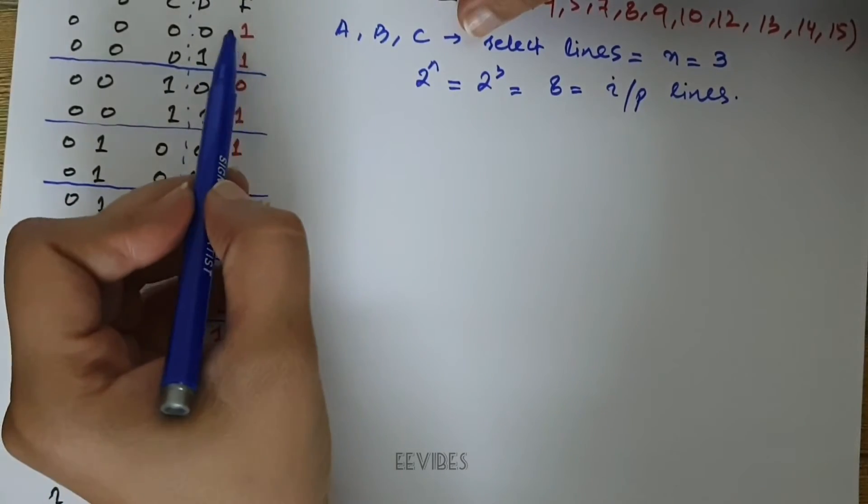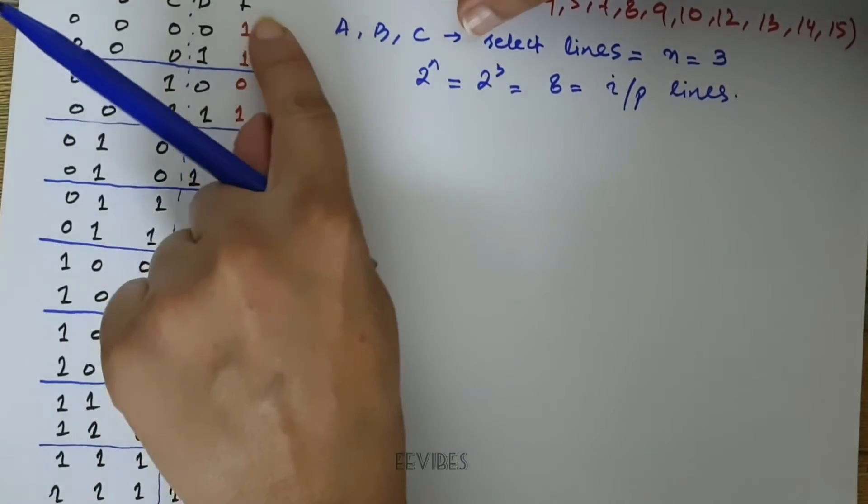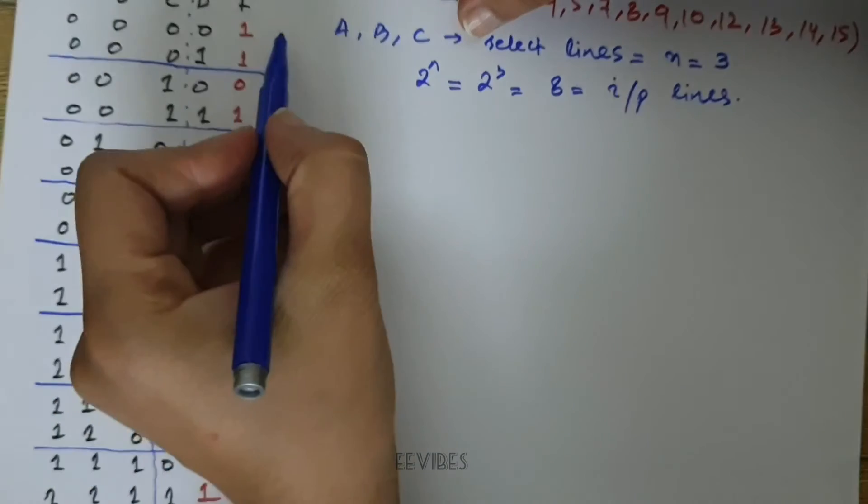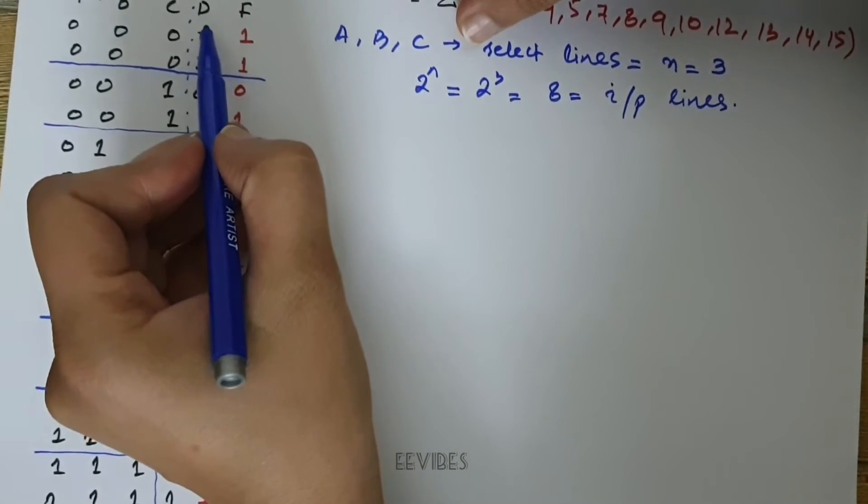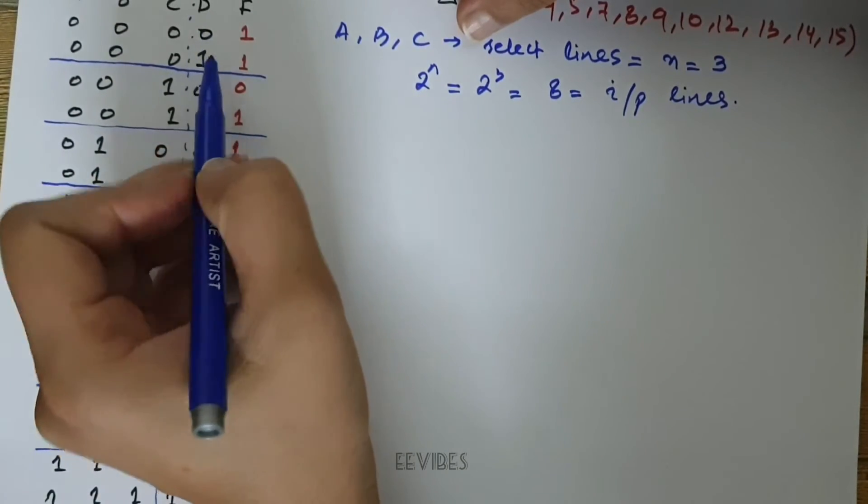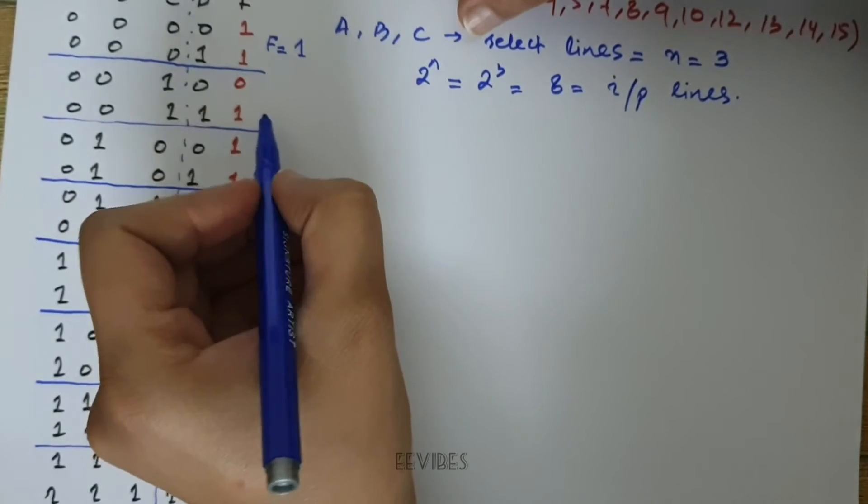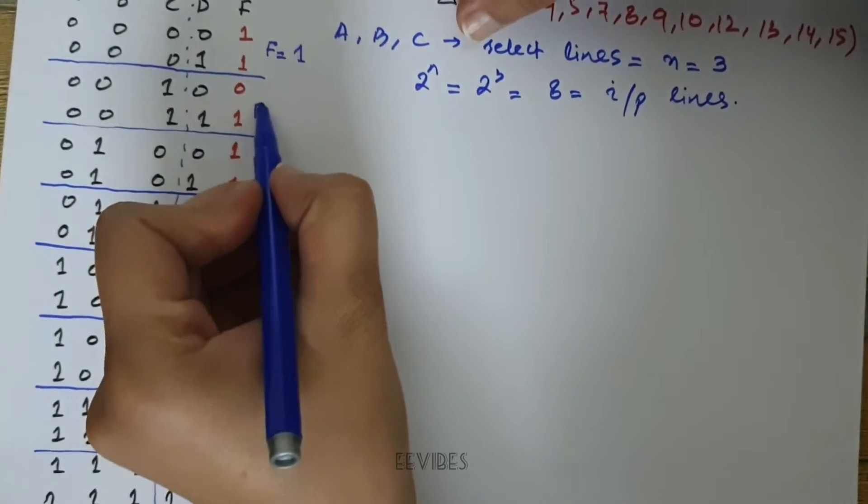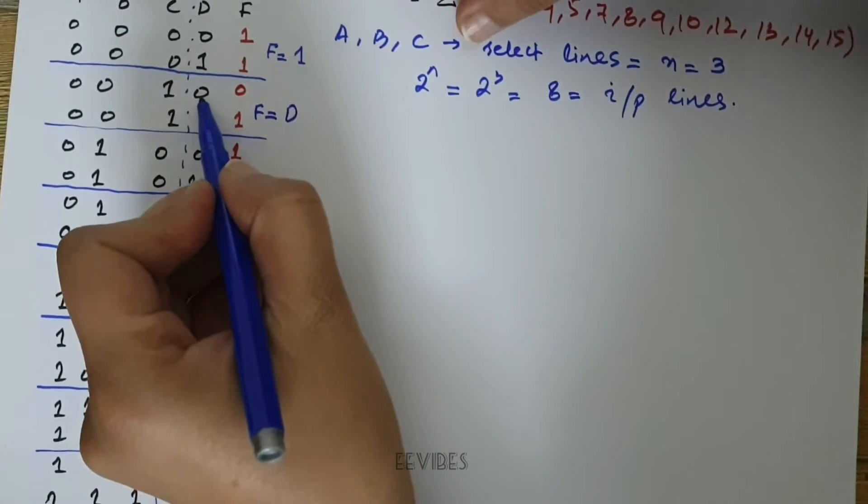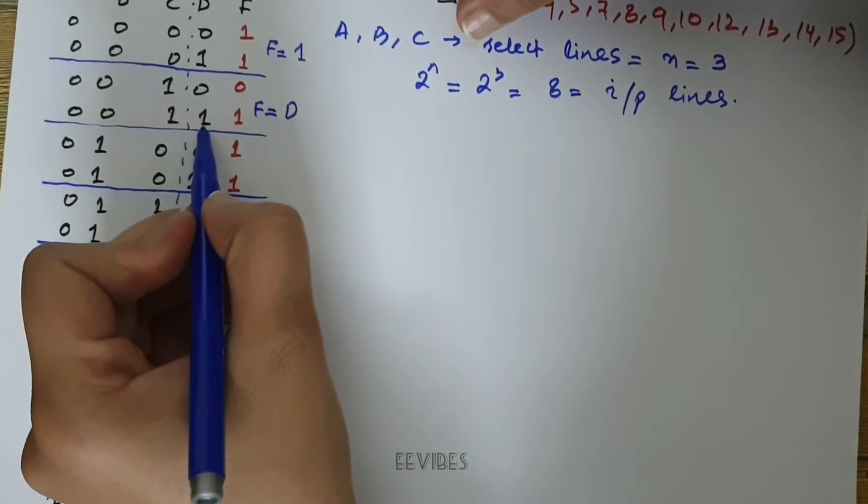Now let's write down the function in terms of the remaining variable D. So for D changing 0 to 1, the function is having the constant value equal to 1. Similarly here F is equal to D, because when D is equal to 0, F is equal to 0; when D is equal to 1, F is equal to 1.